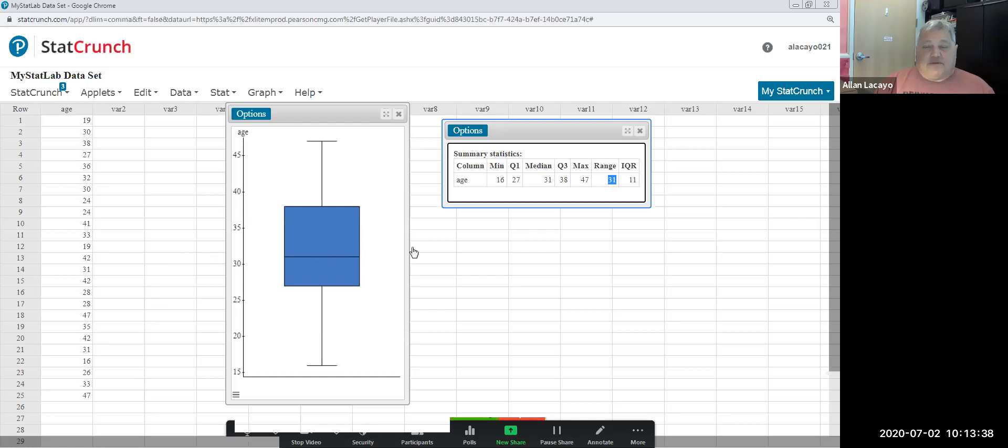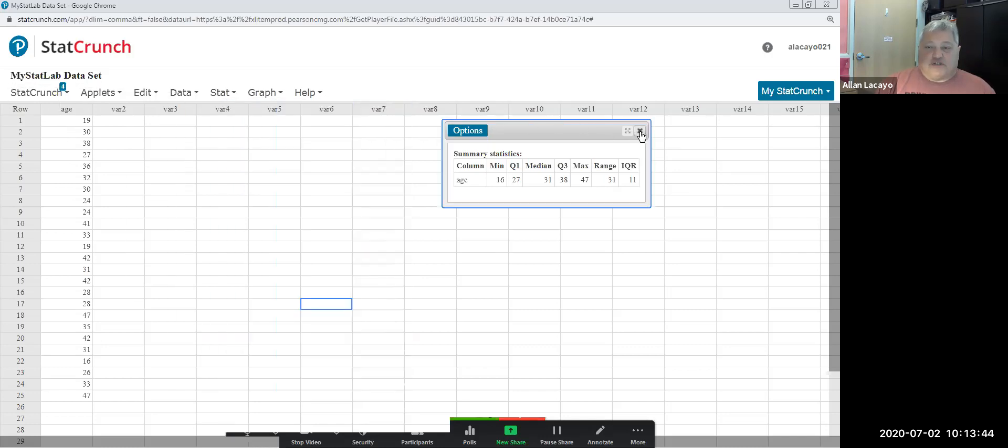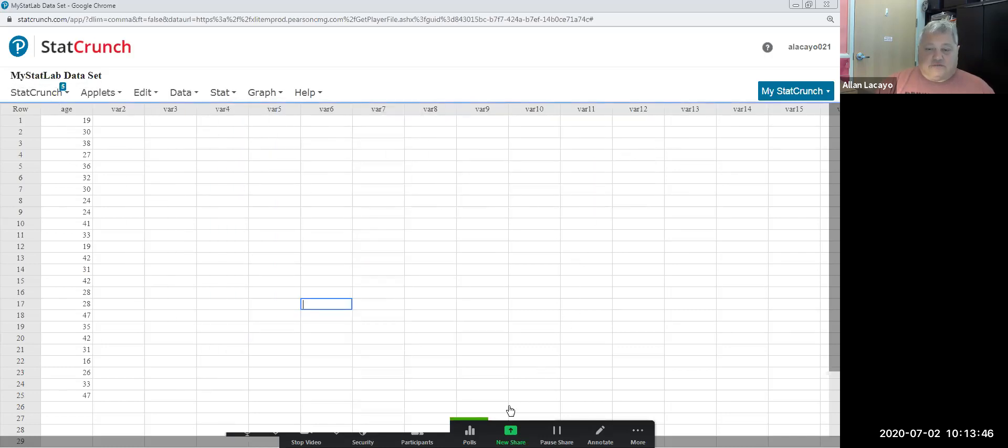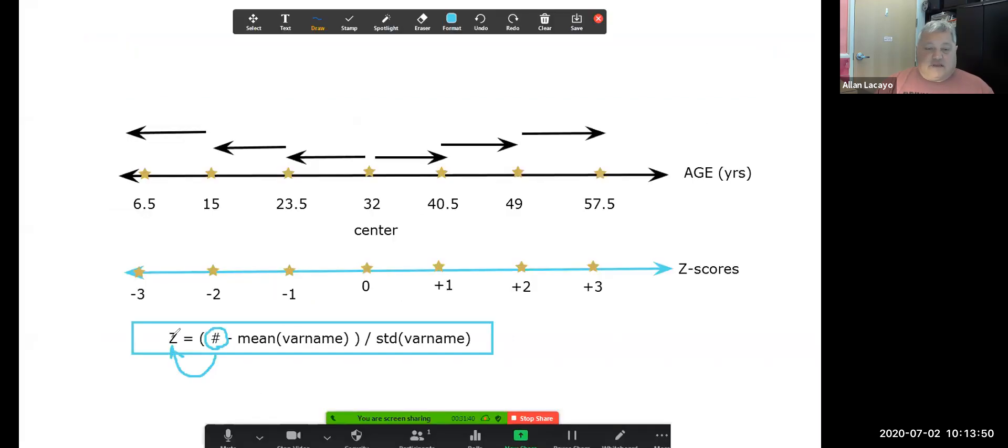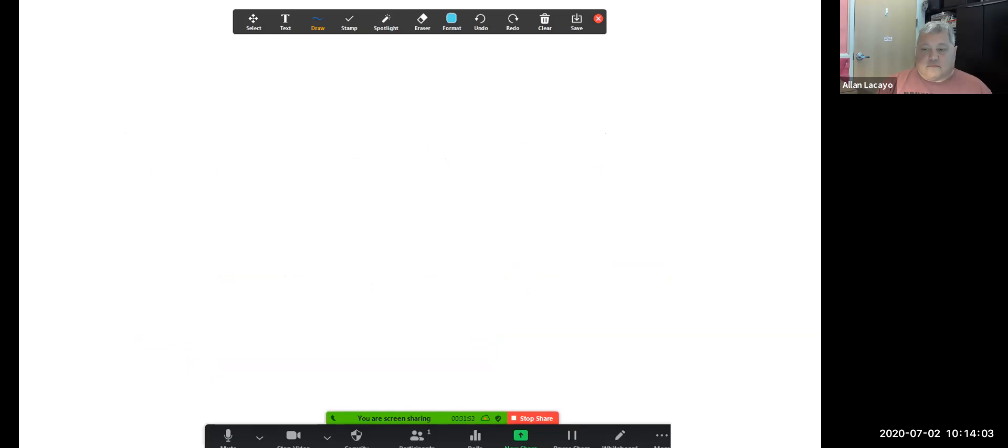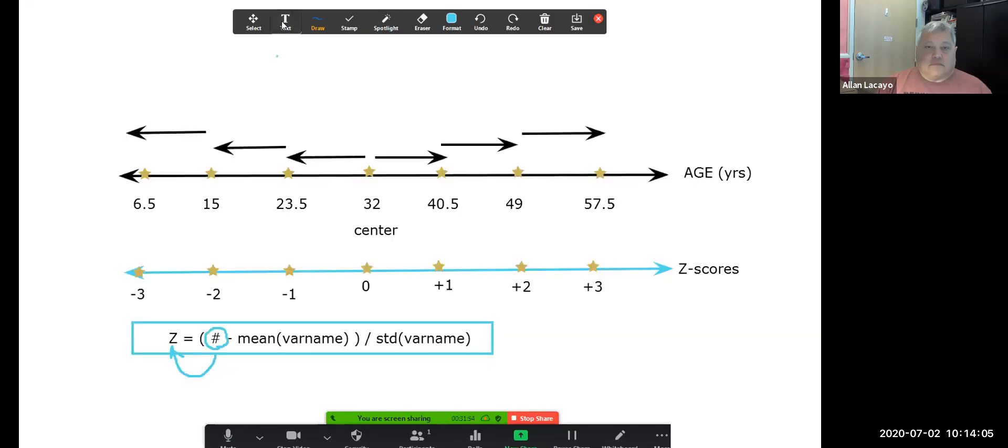My next computation is going to be that of z-scores or standard scores. Z-scores are measures of location. The way z-scores measure location is a z-score tells us how many standard deviations from the mean we find ourselves.